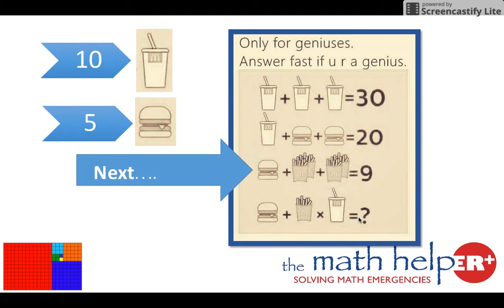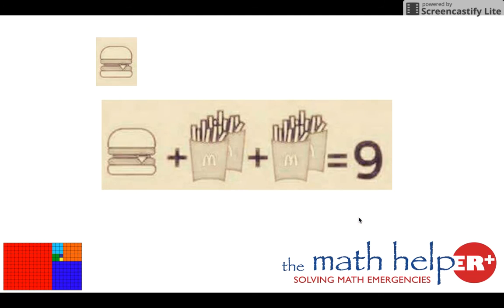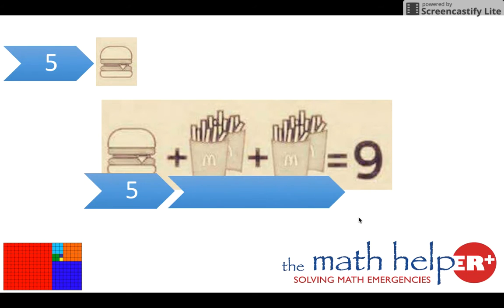What's next? A burger and some fries equal nine. We got the burger, it's five. We know that the rest has to equal nine. That's going to give us four.